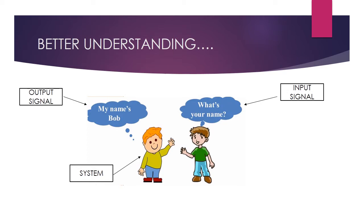For better understanding, let us consider a practical example. Two persons are meeting. One person asks, 'What is your name?' The second person replies, 'My name is Bob.' Here, 'What is your name?' is the input signal, and the second person is the system. His brain processes the input signal and gives the output: 'My name is Bob.' So this person is the system and 'My name is Bob' is the output signal.